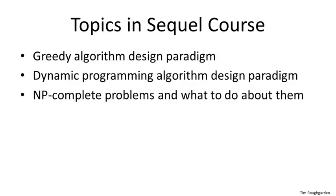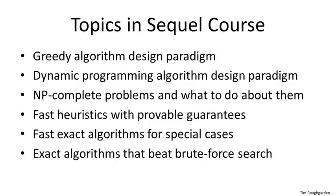The second part of the sequel course concerns NP-complete problems and what to do about them. NP-complete problems are problems that, assuming the famous P ≠ NP conjecture, cannot be solved by any computationally efficient algorithm. We'll discuss the theory of NP-completeness, several ways to approach NP-complete problems, including fast algorithms for special cases, fast heuristics with provable performance guarantees, and exponential time algorithms qualitatively faster than brute force search.